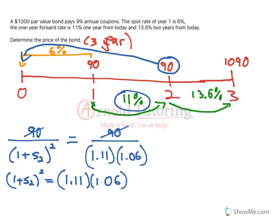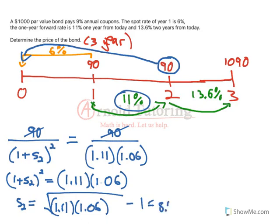So we can cancel the 90s and set the rates equal to each other. So 1 plus S2 squared must equal 1.11 times 1.06. You can also think of this as going forward. S2 is going to be the square root of 1.11 times 1.06 minus 1, and we get a spot rate, a 2 year spot rate of about 8.47%.